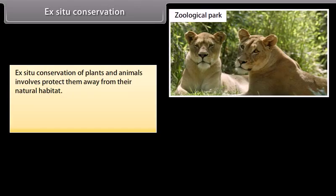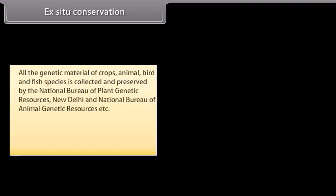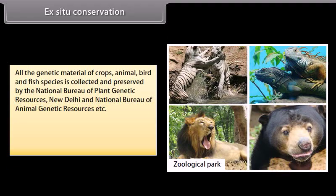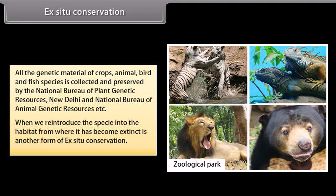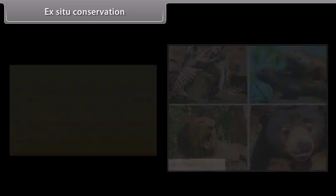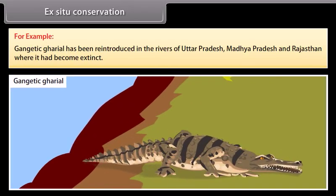Ex-situ conservation of plants and animals involves protecting them away from their natural habitat — for example, zoological parks and botanical gardens. All genetic material of crops, animal, bird, and fish species is collected and preserved by the National Bureau of Plant Genetic Resources, New Delhi, and the National Bureau of Animal Genetic Resources. Reintroducing a species into a habitat from which it has become extinct is another form of ex-situ conservation. For example, the Gangetic gharial has been reintroduced in rivers of Uttar Pradesh, Madhya Pradesh, and Rajasthan where it had become extinct.